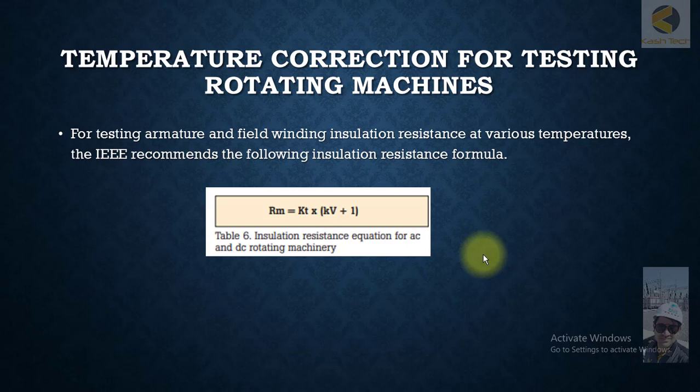For example, you are testing insulation at 40 degrees centigrade, next year you are doing it at 30 degrees centigrade, and third year at 20 degrees centigrade. All three are different, so you can't compare it. So the principle is that we are converting the resistance to an equivalent 20 degrees centigrade.